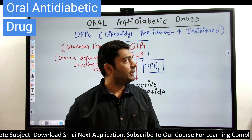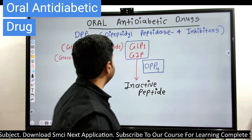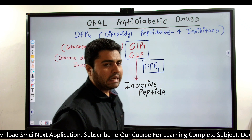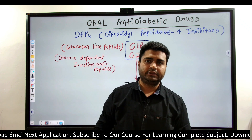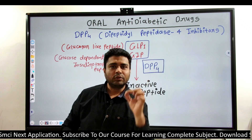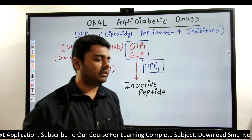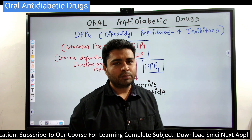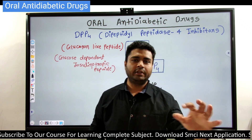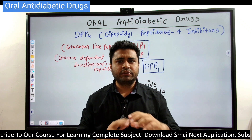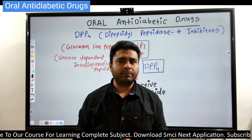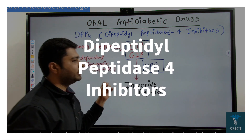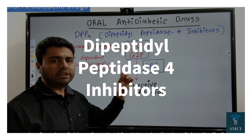Hello friends, myself Dr. Mayur Saitha, and in this video we are going to discuss one group from the oral anti-diabetic drugs. The name of the group is DPP4 inhibitors. The full form of DPP4 is Dipeptidyl Peptidase 4 inhibitors.